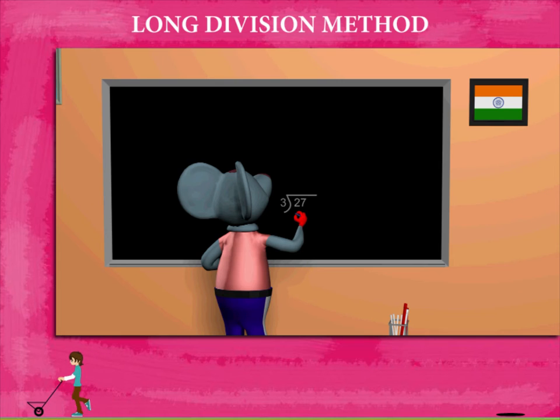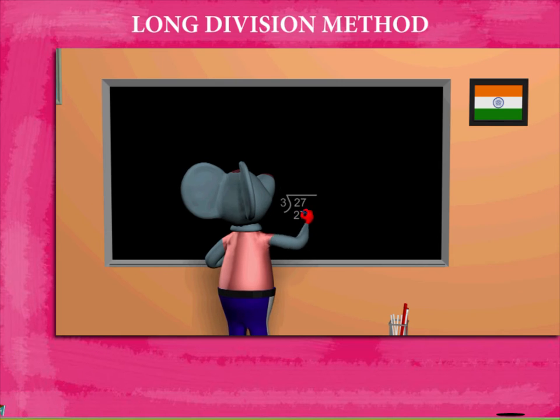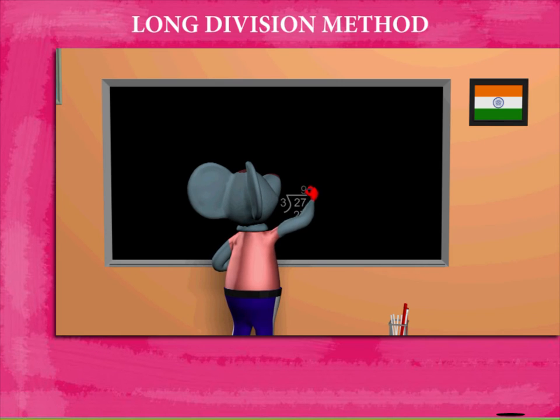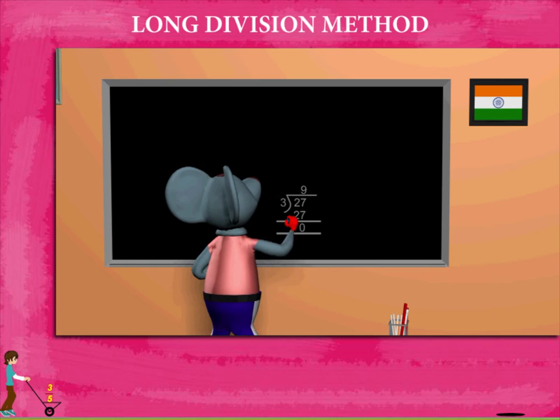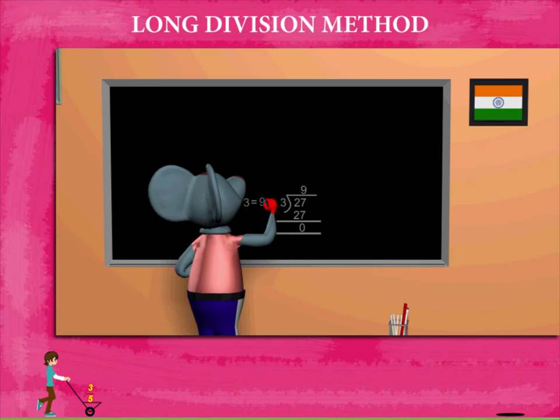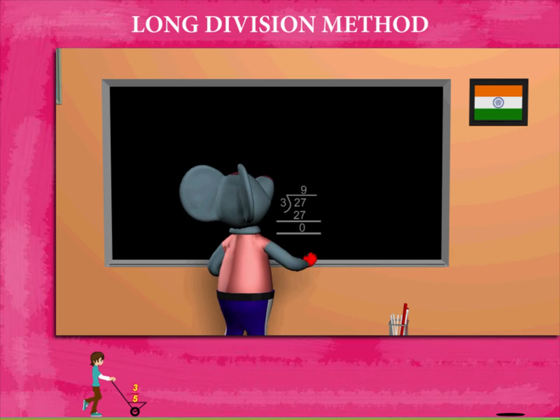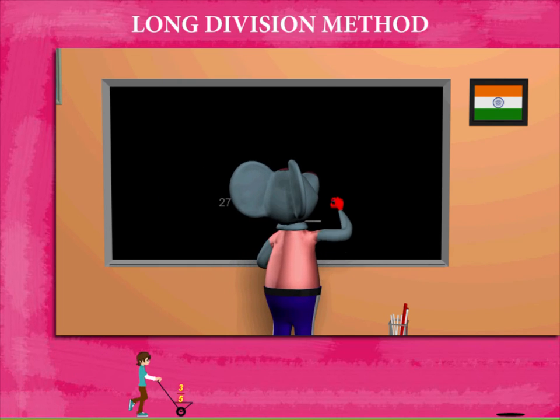Three 9's are 27. So he writes 9 as the quotient and the remainder is 0.